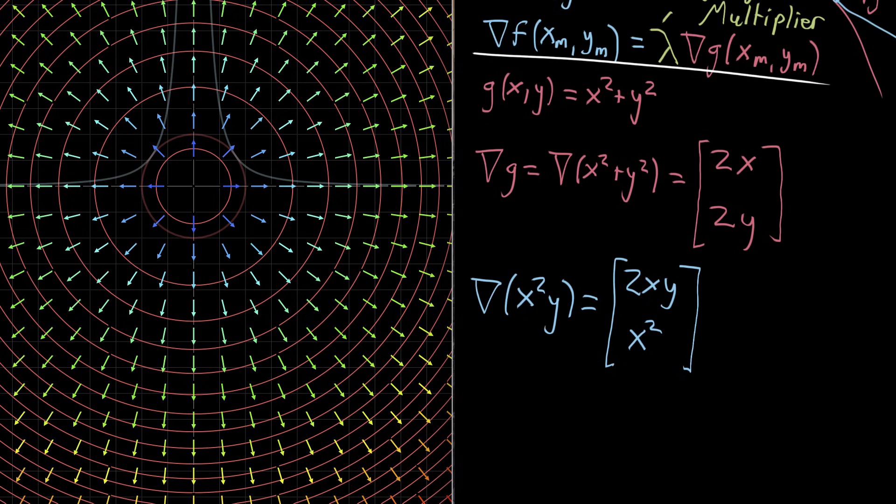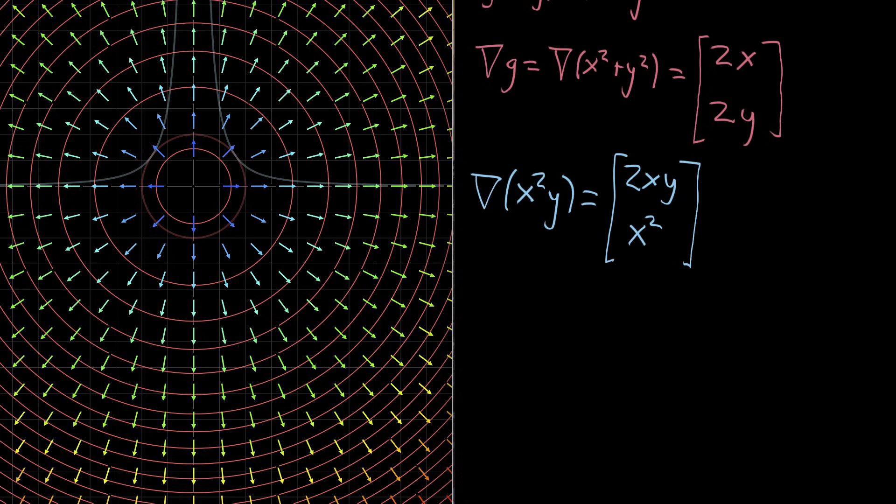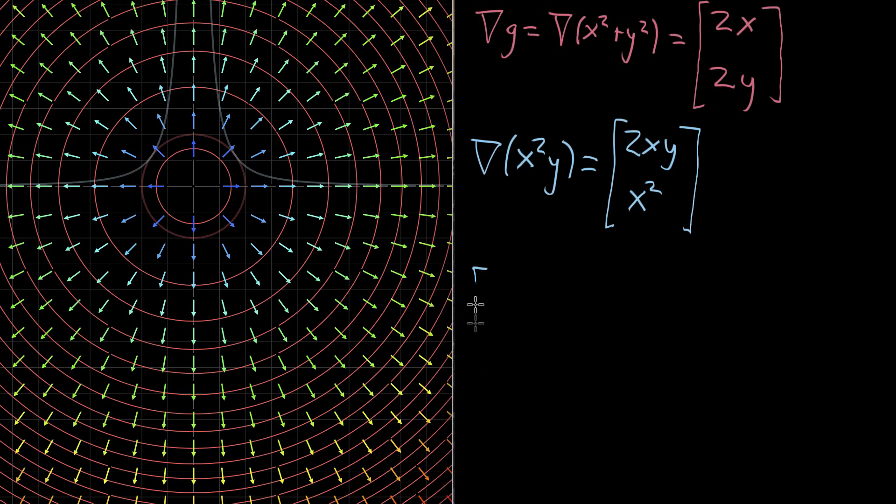So that's what we get. And now if we kind of work out this Lagrange multiplier expression using these two vectors, what we have written, what we're going to have written is that this vector is proportional with a proportionality constant lambda to the gradient vector for g to 2x, 2y.